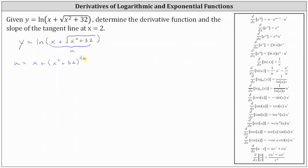In this form, it'll be much easier to determine u prime, which we need to apply the chain rule. u prime is equal to the derivative of x plus the quantity x squared plus 32 raised to the power of 1/2 with respect to x. The derivative of x with respect to x is 1, and then we have plus the derivative of the quantity x squared plus 32 raised to the power of positive 1/2, which is also going to require the chain rule, where the inner function, which we'll call v, is equal to x squared plus 32. So v prime is equal to the derivative of x squared plus 32, which is 2x.